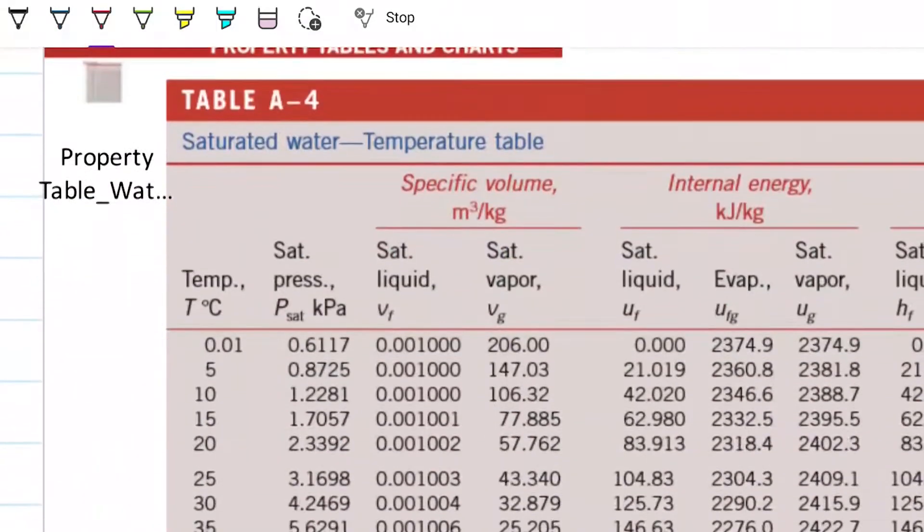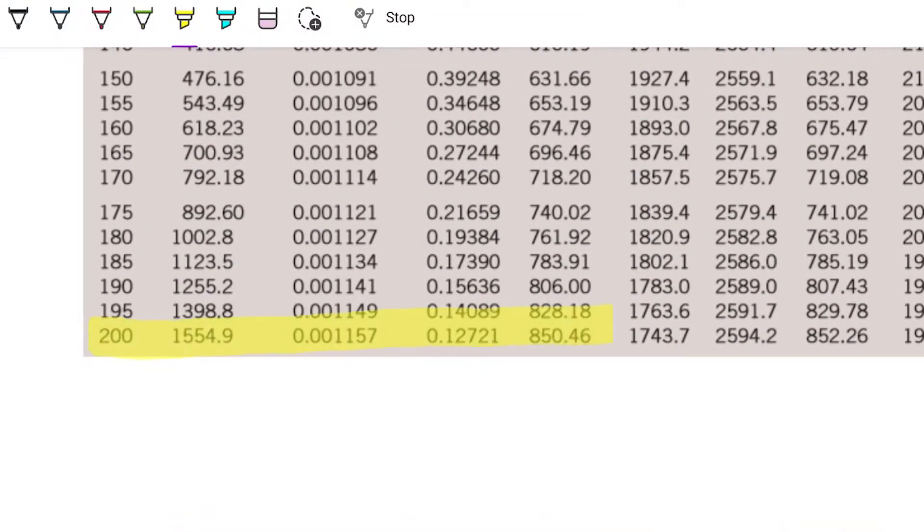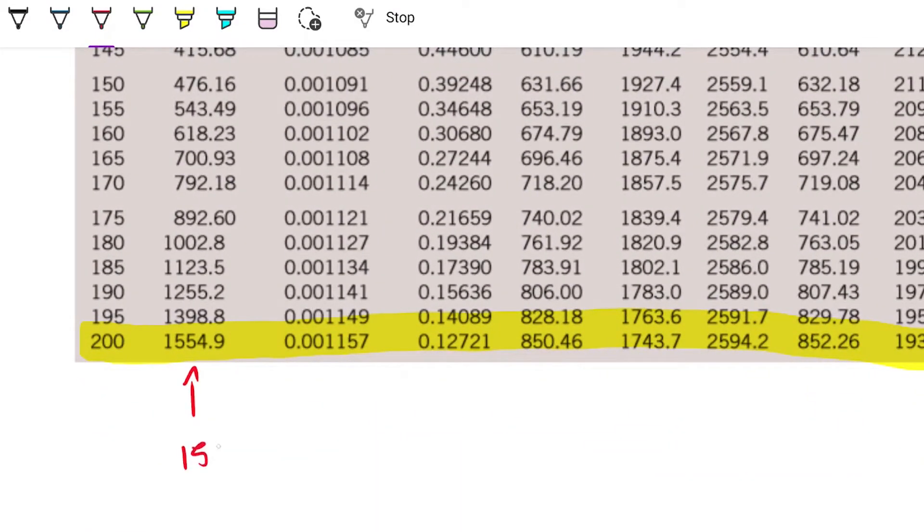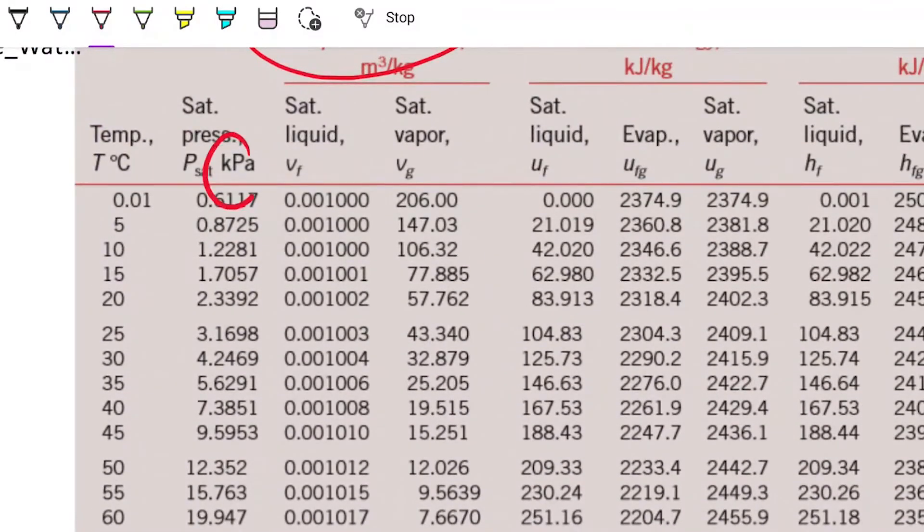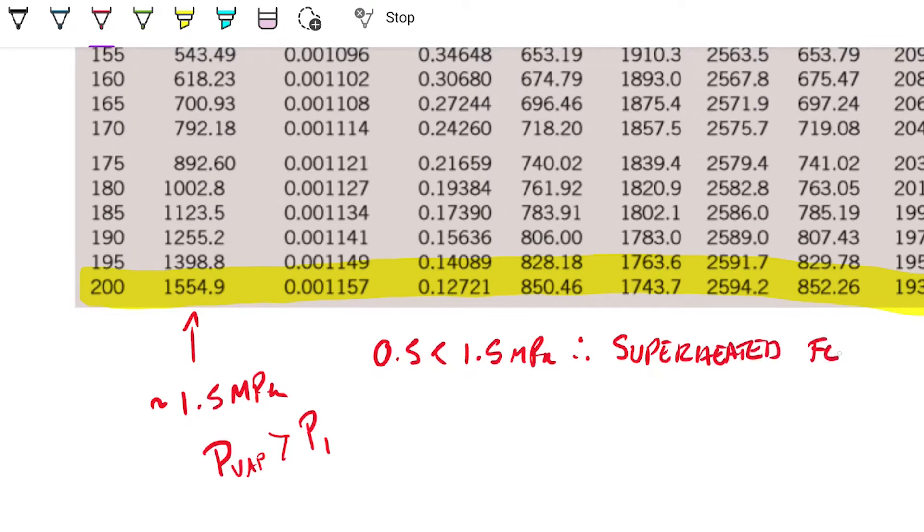So we go here to temperature table for water, and I'm looking for 200 Celsius. And here it is. My pressure is the second column here, this is in kilopascals. So that's going to be 1.5 megapascals. So that means that the vapor pressure 1.5 is greater than P1. In other words, 0.5 is smaller than 1.5 megapascals. So therefore, we conclude this as a superheated fluid.